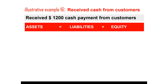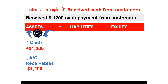The customers paid $1,200. This increases the cash asset by $1,200 but reduces the accounts receivable by the same amount because the customers have paid $1,200. This is also a one-sided transaction recorded only on the asset side of the equation.